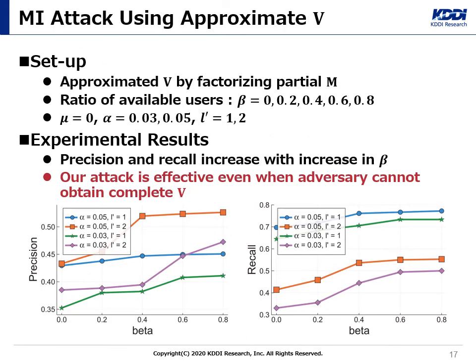Finally, I will show that our model inversion attack is effective even using an approximate item profile. In this experiment, we assumed the adversary could observe all ratings from a part of users. We set the ratio beta of available users to 0, 0.2, 0.4, 0.6, or 0.8, and approximated the item profile using a partial rating matrix. We set mu to 0 and poisoning rate to 0.03 or 0.05, and threshold L' to 1 or 2. Both precision and recall increase with an increase in beta. So our model inversion attack is effective even when the adversary cannot obtain the complete item profile.